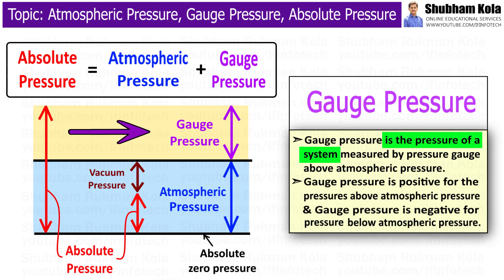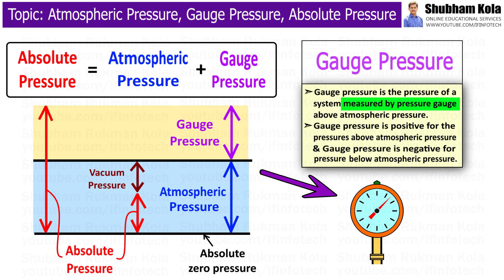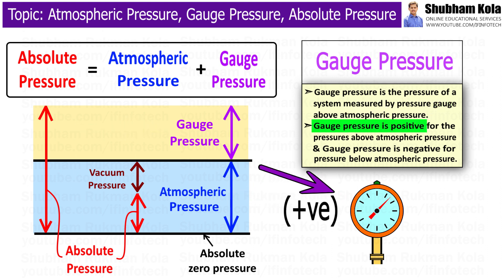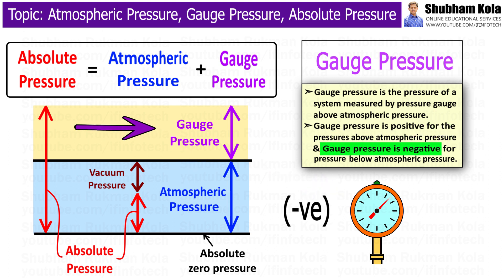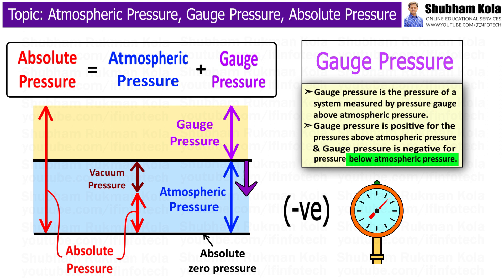The gauge pressure is the pressure of a system measured by the pressure gauge above atmospheric pressure. The gauge pressure is positive for pressures above atmospheric pressure, and negative for pressures below atmospheric pressure.